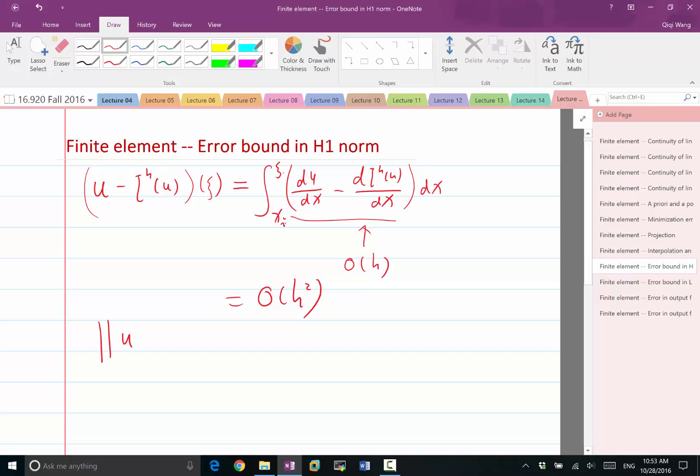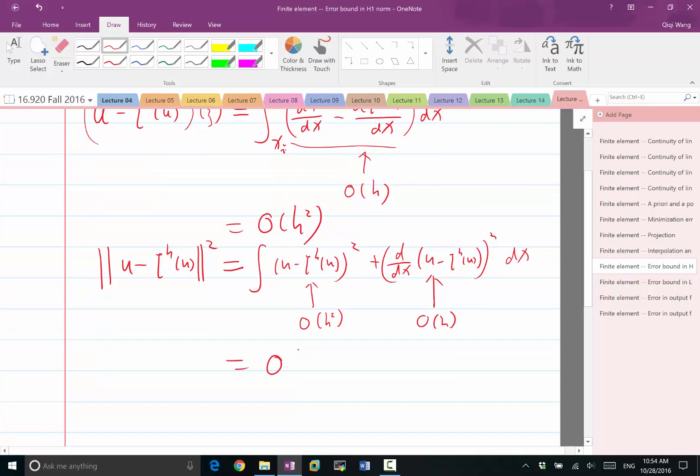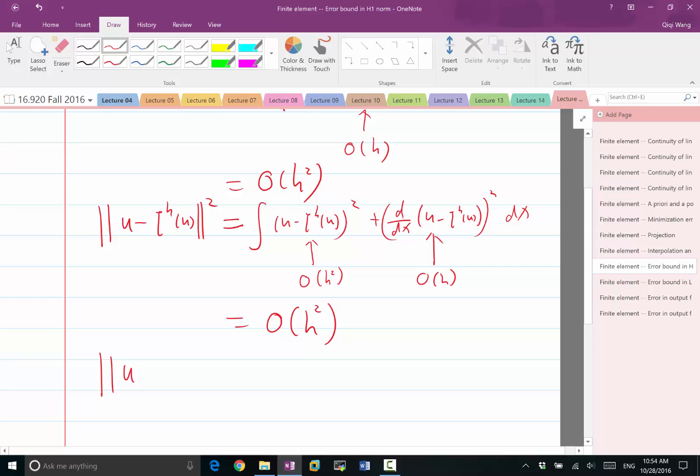So the Sobolev norm of U minus interpolant of U squared is going to be equal to integration of U minus IH of U squared, and this term before squared is O H squared, plus d/dX of U minus interpolant of U squared, and this thing before squared is O H. So this whole thing should be O H. After I square this is O H squared, this is O H fourth, so this is O H squared.